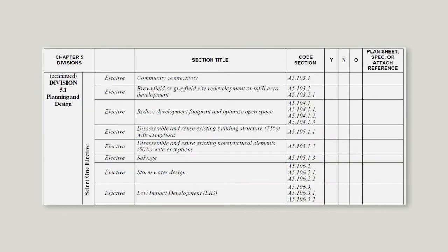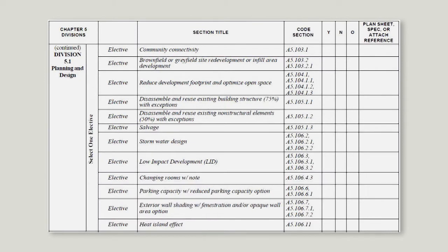This is important because some jurisdictions require the checklist to be turned in when plans are submitted for permitting. Local jurisdictions may customize the checklist if they have adopted tiers or tier elements as mandatory. So it's a good idea to consult with your local building department early in the design phase and before seeking a permit.